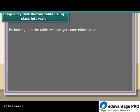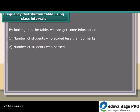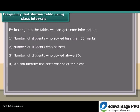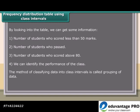By looking into the table, we can get some information: Number of students who scored less than 50 marks, number of students who passed, number of students who scored above 80, and we can identify the performance of the class. The method of classifying data into class intervals is called grouping of data.